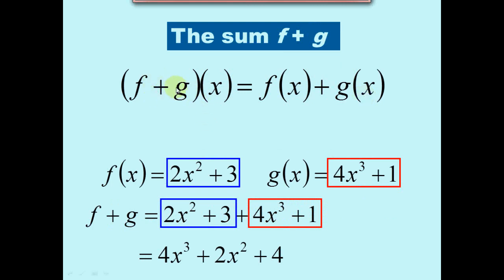Over here we have f plus g of x, and that notation — which can sometimes be confusing — simply means add f of x plus g of x. So if we have f of x equals 2x squared plus 3, and g of x is 4x cubed plus 1, then f plus g is just adding the two together, and when you add like terms you get the result. So it's not too bad so far.